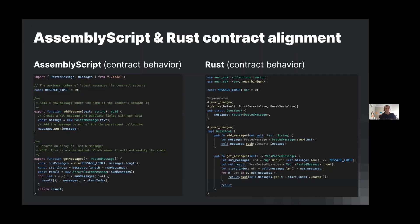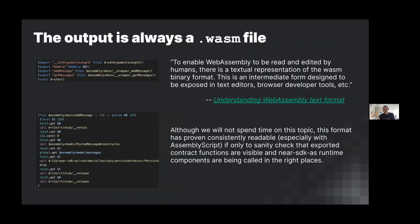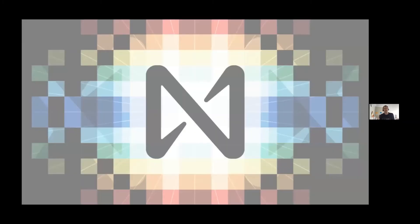Both AssemblyScript and Rust ultimately generate a WASM file. The WASM text format from AssemblyScript is easy to read — you can follow the code line by line, seeing pushes and pops to the stack. The Rust toolchain produces harder-to-read WASM text, but regardless of language choice, you get the same type of artifact at the end that you can simulate locally before deploying.